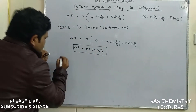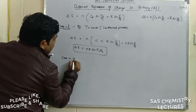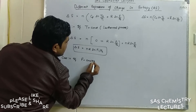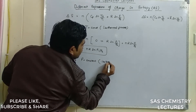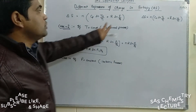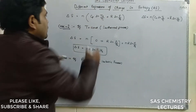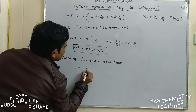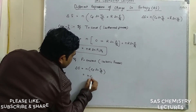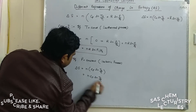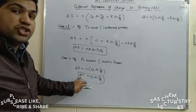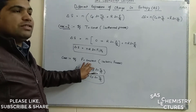Case two: if pressure is constant, the process is an isobaric process. For an isobaric process, P1 and P2 are equal, so the ln(P1/P2) term becomes zero. The formula becomes ΔS = N·Cp·ln(T2/T1). This formula is used when temperatures are given and the problem asks for change in entropy for an ideal gas undergoing an isobaric process.